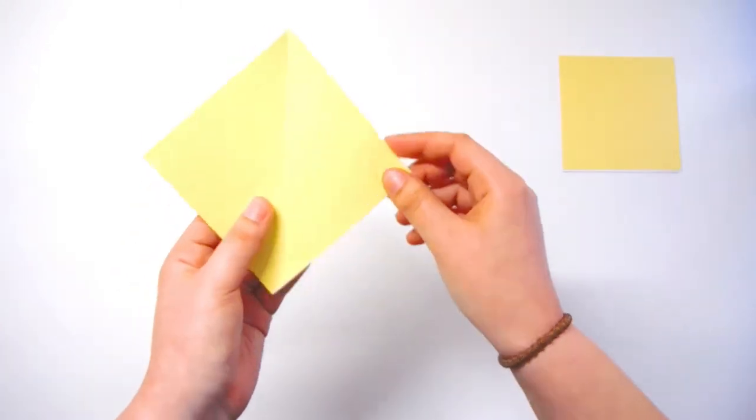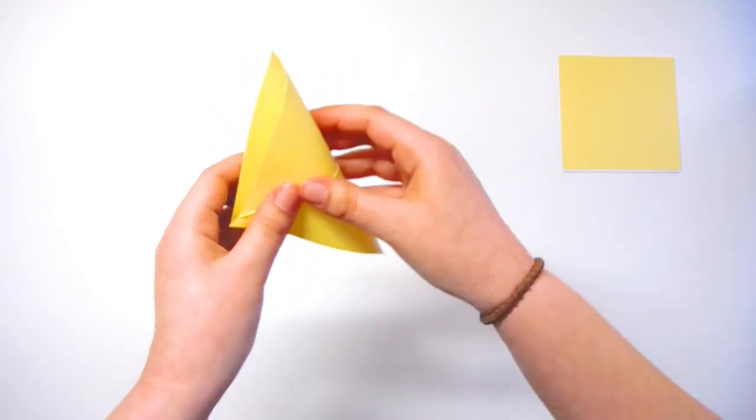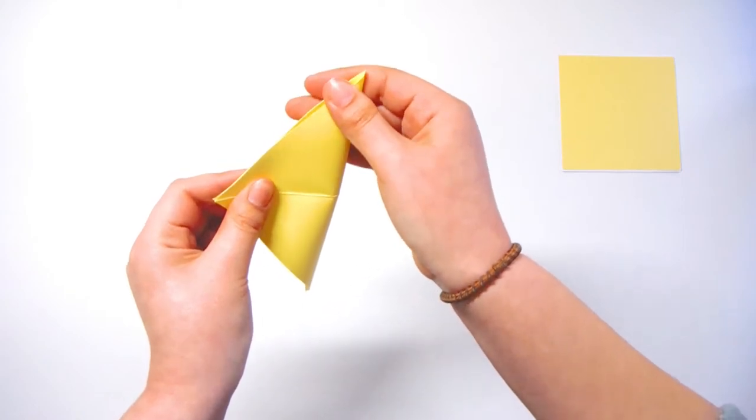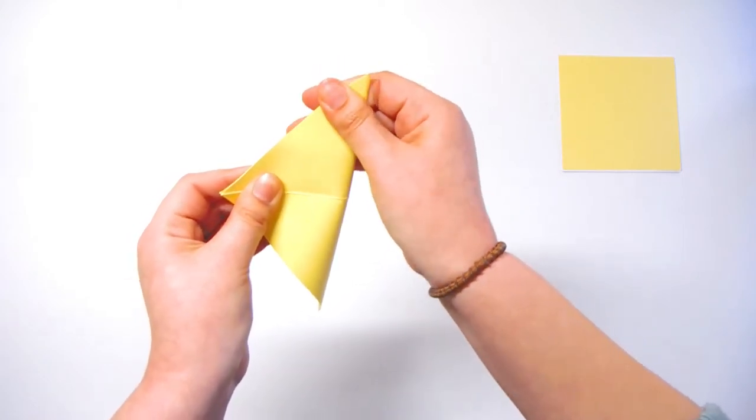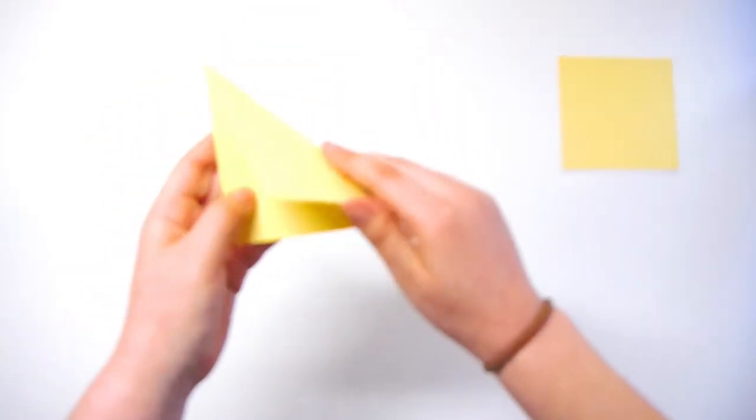We are going to then take these two corners and fold it in a triangle once again except in the opposite direction. Then we are going to do the exact same thing, folding it and make sure the edges are nice and flush. Now we are going to open it up again.